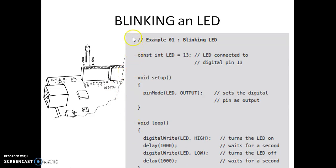Let us see the first program where the task is to blink an LED. The LED is placed with its anode connected to pin number 13 and cathode connected to ground. The LED is supposed to blink. This Arduino program has two loops — one infinite setup loop and one execution loop — the setup loop and the loop function.